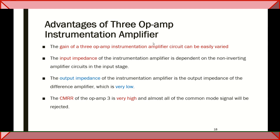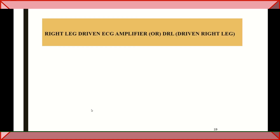The advantages of the 3 op-amp instrumentation amplifier are: very high gain that is easily varied using an adjustable resistor; very high input impedance; very low output impedance; and very high CMRR.